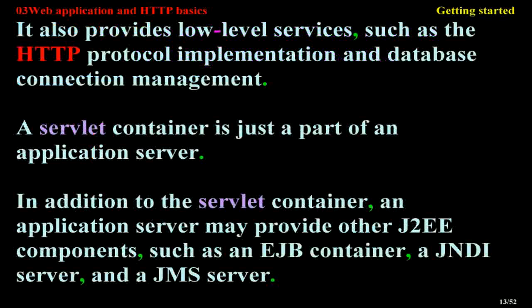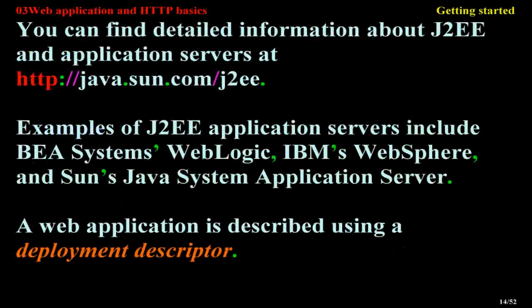A servlet container is just a part of an application server. In addition to the servlet container, an application server may provide other J2EE components such as an EJB container, a JNDI server, and a JMS server. You can find detailed information about J2EE and application servers at the Java Sun website. Examples of J2EE application servers include BEA System's WebLogic, IBM's WebSphere, and Sun's Java System Application Server.